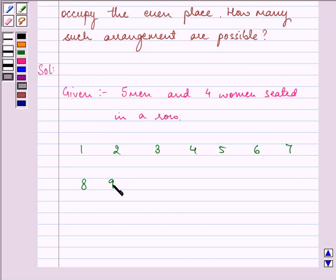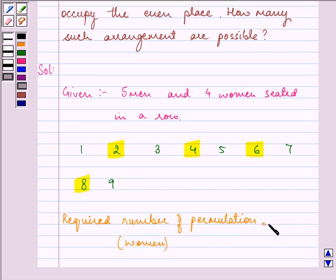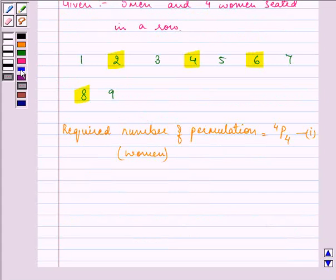Now we see that even places are 2, 4, 6, and 8, that is 4 places. So women can occupy only these 4 places. Using theorem 1 of permutation, there will be as many number of ways of seating 4 women as permutation of 4 different places taken 4 at a time. So required number of permutation for women is equal to 4P4, let it be the first equation.